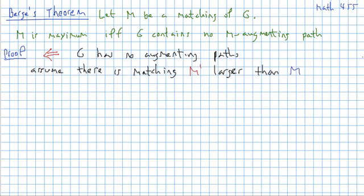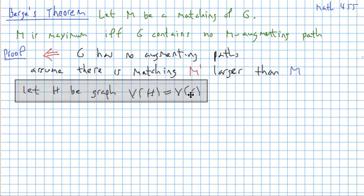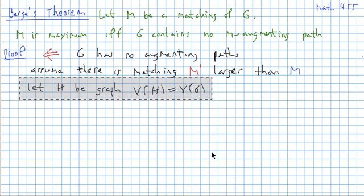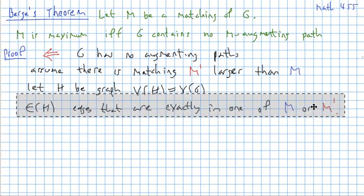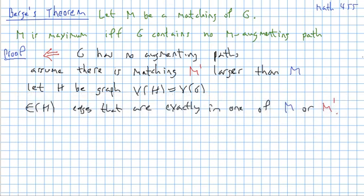So given this assumption, we then build the graph H that has the same vertices as G, but the edges are the edges of the graph that are exactly in one of M or M prime.